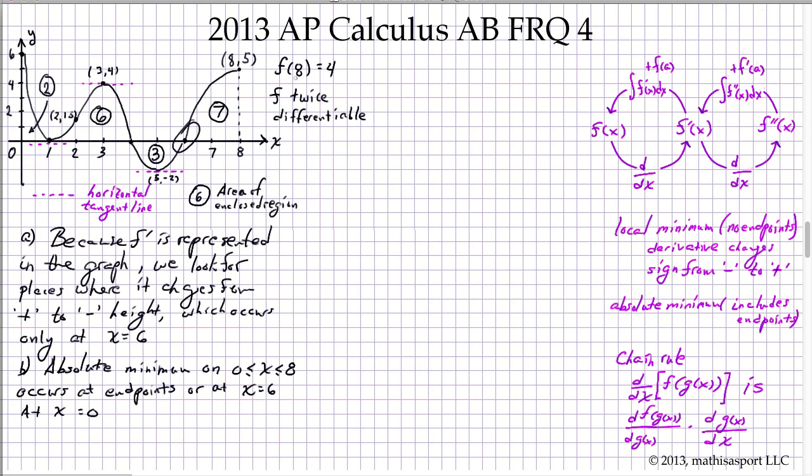The initial condition we have is f(8) equals 4. So to find f(0), we start at f(8) and then do the integral. Notice I'm going from 8 to 0, counter to the ordinary direction of f prime of x dx.